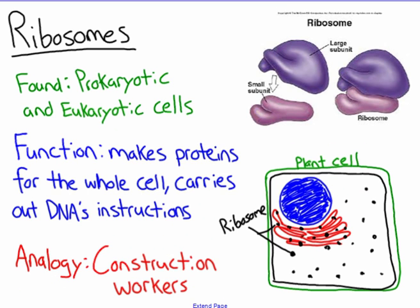Ribosomes — I'm a huge fan of ribosomes because every single cell needs ribosomes to work. Prokaryotic, eukaryotic — all cells need ribosomes. What they do is they make proteins for the whole cell, essentially carrying out the DNA's instructions. Pretty much any organelle we're talking about here is in some way made up of proteins. Lysosomes are solely made up of proteins; the cell membrane is made up of proteins.